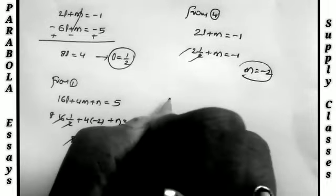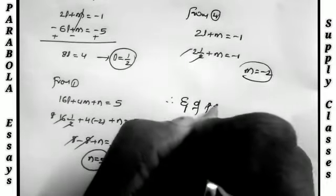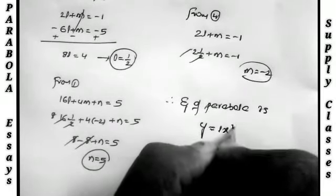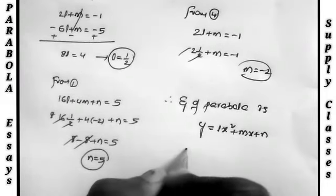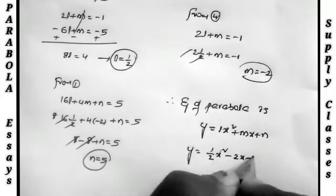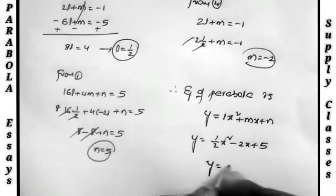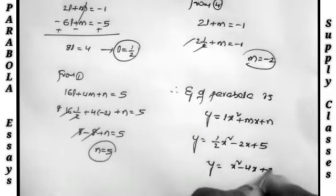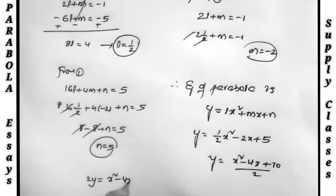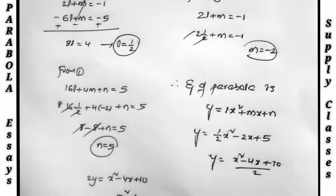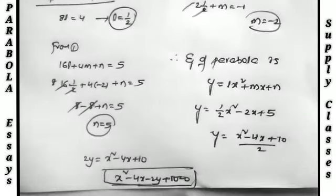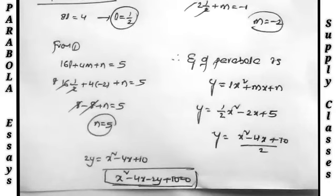Therefore the equation of the parabola is y = lx² + mx + n, substituting l = 1/2, m = −2, n = 5: y = (1/2)x² − 2x + 5. Taking the LCM: y = (x² − 4x + 10)/2. Cross-multiplying: 2y = x² − 4x + 10. Rearranging, the required answer is: x² − 4x − 2y + 10 = 0. These are the most important problems. I will continue with the remaining questions in the next video.